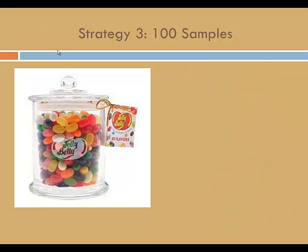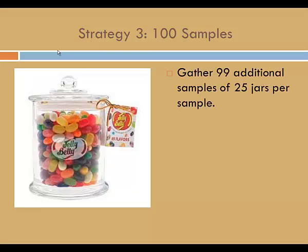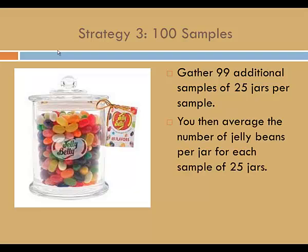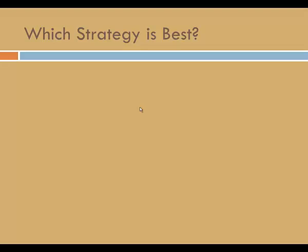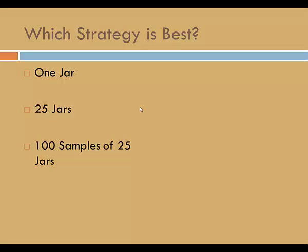Let's consider a third strategy, in which we take 100 samples. We already have one sample of 25. Let's gather 99 additional samples of 25 jars per sample. Then average the number of jelly beans per jar for each sample of 25 jars, and then average the 100 sample means. So which strategy is the best? The count from one jar, the mean for 25 jars, or the average mean from 100 samples of 25 jars? The third option would give the best estimate. But keep in mind, we need the counts from 2500 jars for this strategy. In that case, we might as well get a count from every single jar.